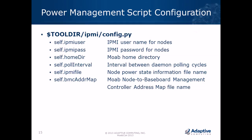To complete power management configuration, edit the config.py file and set the Python variables inside it. The reference scripts assume the IPMI interface into every compute node uses the same username and password — set those here. You also need to tell the scripts where the Moab home directory is, specify the polling interval for the daemon, and provide the name of the temporary node power state file.